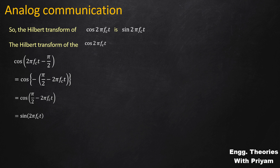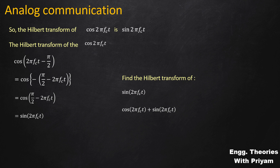That's all for this lecture. Homework: find the Hilbert transform of sin(2πf_c·t) and the Hilbert transform of cos(2πf_c·t) + sin(2πf_c·t). You can solve these by shifting the terms by π/2. Post your answers in the comment section. If you have any doubts, ask in the comments, and don't forget to hit the subscribe button.